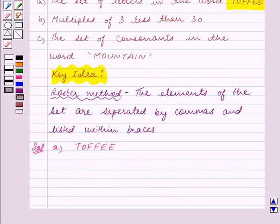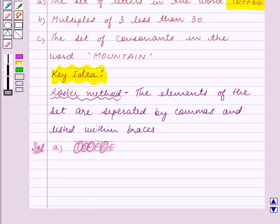Now the distinct letters of this word are T, O, F, and E. We have to write the set of letters in the word TOFFEE in roster form. Now going back to the key idea, we have in roster method the elements of the set are separated by commas and listed within braces.